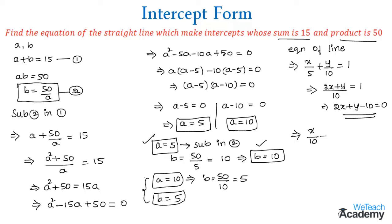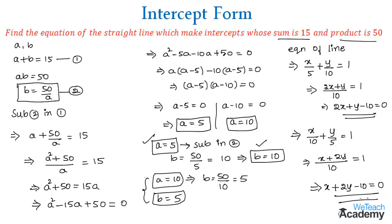For the second case using a = 10 and b = 5, we get x/10 + y/5 = 1. Taking LCM as 10 gives x + 2y = 10, so the equation is x + 2y - 10 = 0. These are the equations of the straight lines which make intercepts whose sum is 15 and product is 50. Note that the intercept form is x/a + y/b = 1.